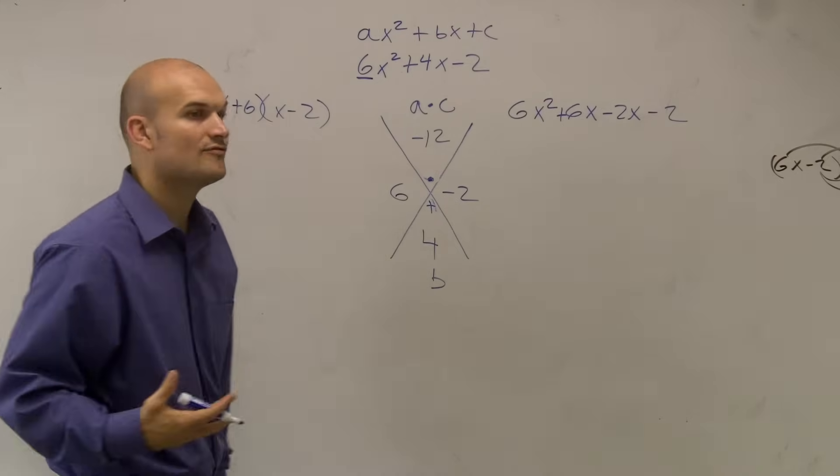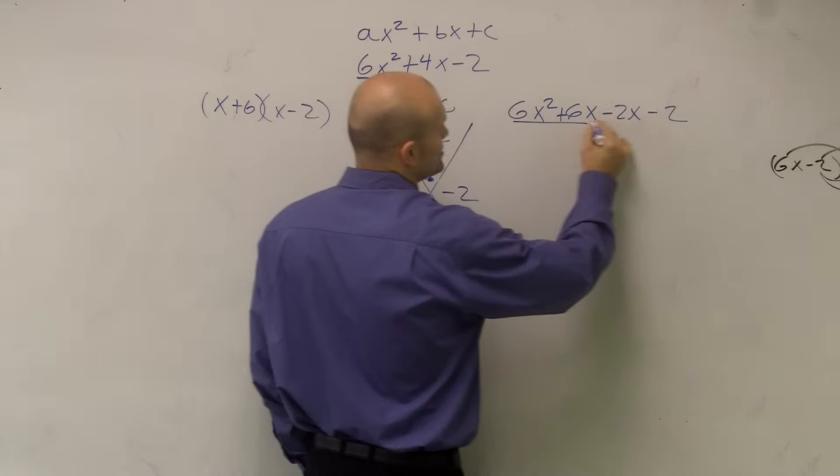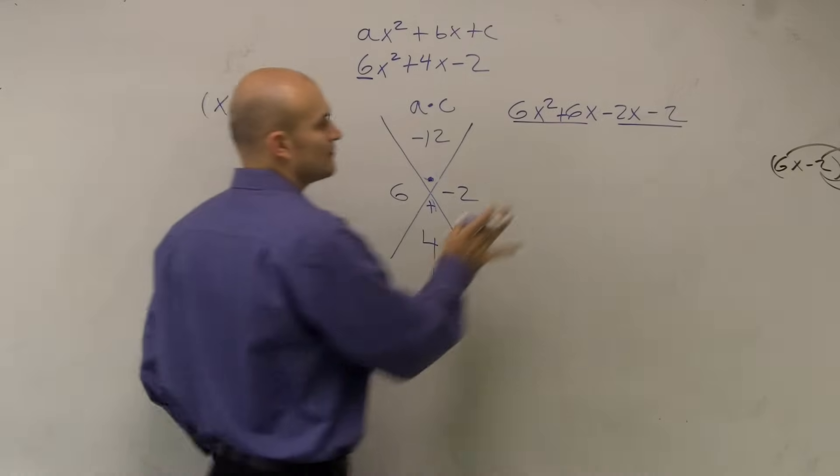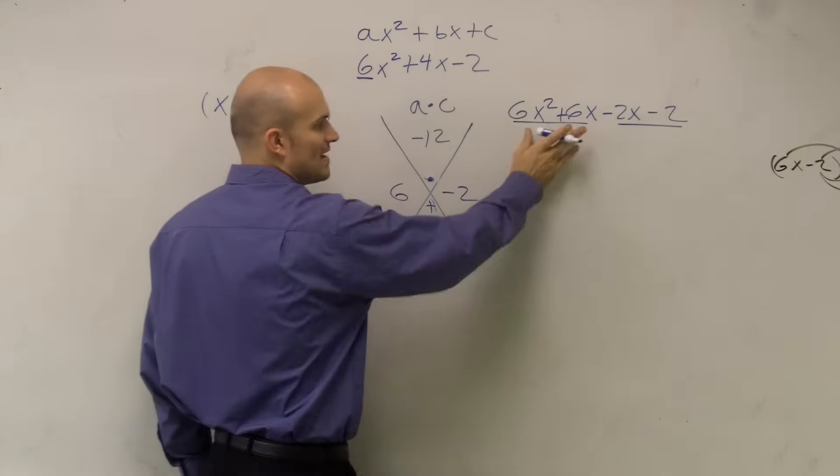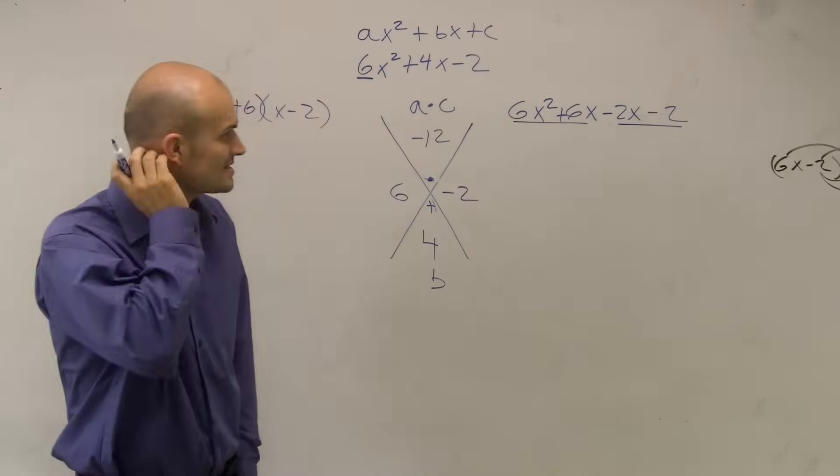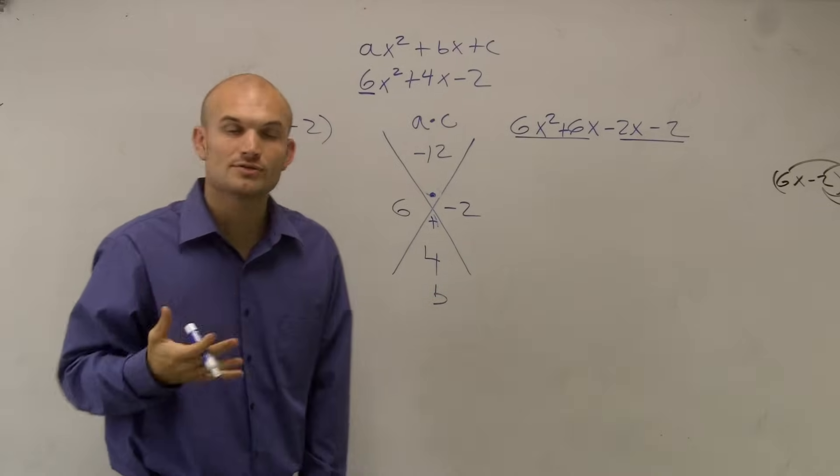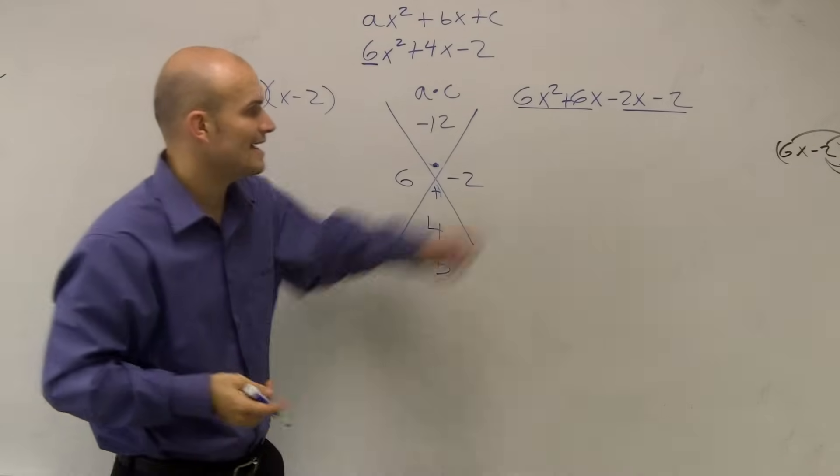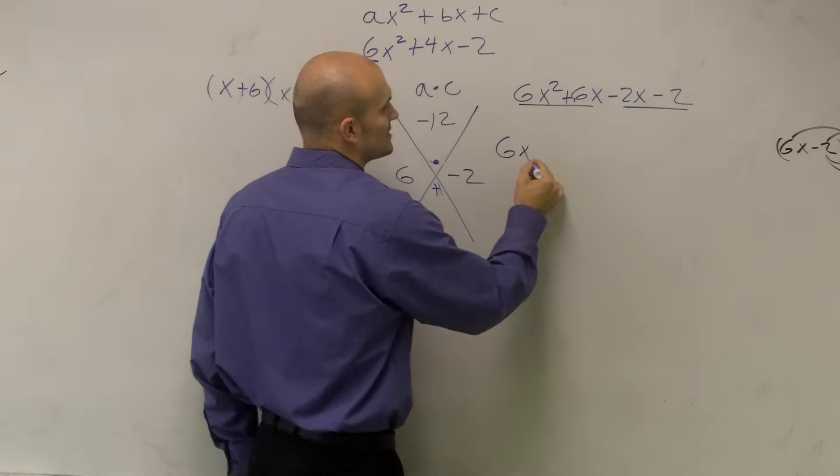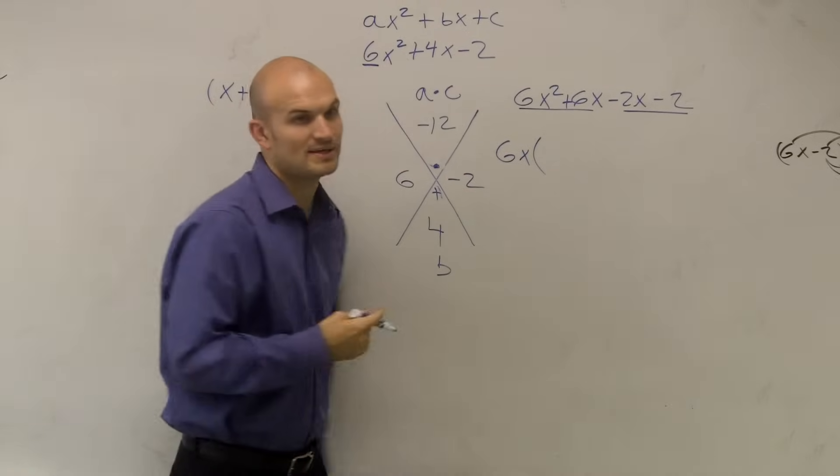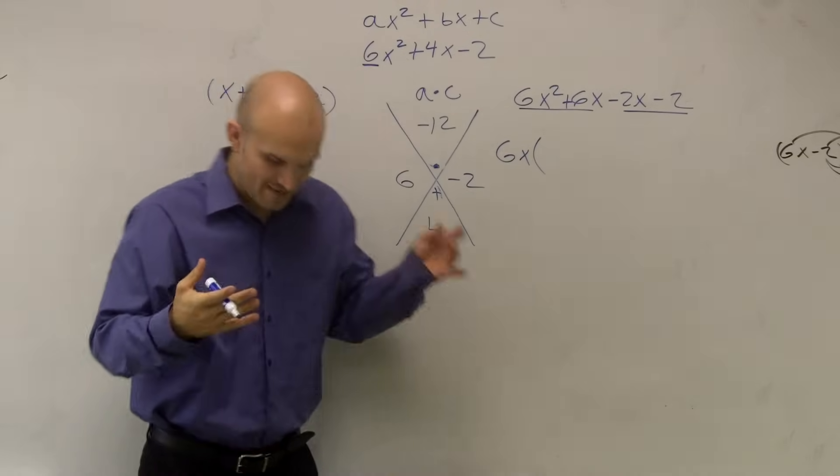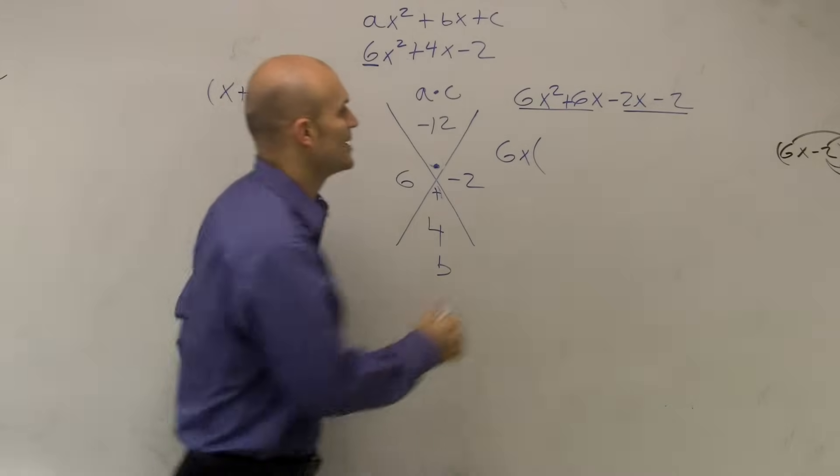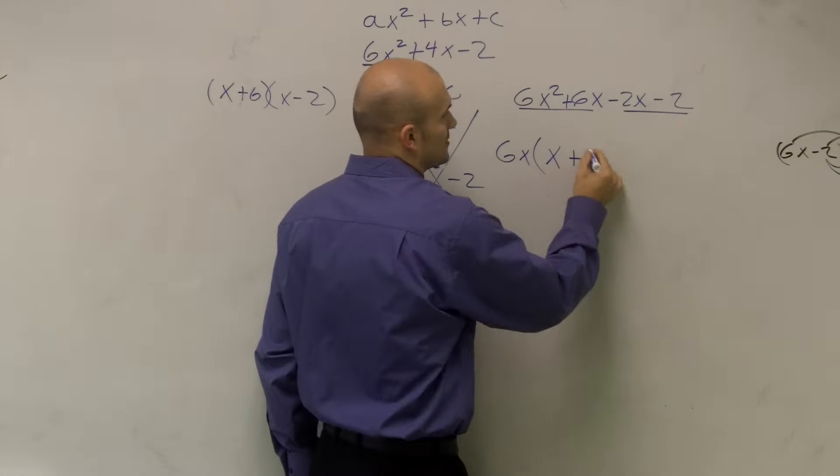Now what I can do is I can factor each one of these terms. So I'm going to factor the first two terms and the last two terms. When I factor the first two terms, I look at what is a 6x squared plus a 6x, what do those have in common? Well, these two terms, they both have in common a 6 and an x. So when I factor out a 6x, the first thing I'm thinking of is when I divide out a 6x, what I'm left with is an x plus 1.